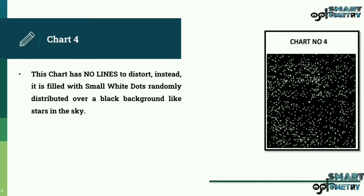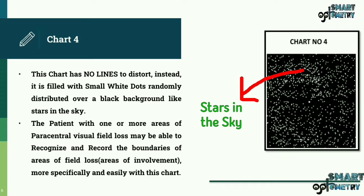Chart 4. This chart has no lines to distort. Instead, it is filled with small white dots randomly distributed over a black background like stars in the sky. The patient with one or more areas of paracentral visual field loss may be able to recognize and record the boundaries of areas of field loss, the areas of involvement, more specifically and easily with this chart. Here you can see the Amsler's chart having a black background with small white dots randomly distributed over it.